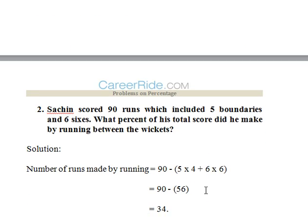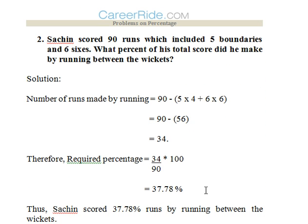Second question: Sachin scored 90 runs which included 5 boundaries and 6 sixes. What percentage of his score did he make by running between the wickets? Out of 90 runs, Sachin hit 5 boundaries and 6 sixes, and other than these boundaries and sixes, he ran between the wickets. So we need to find out the percentage of all the runs taken between the wickets.